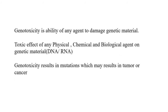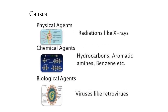Genotoxicity is the ability of any agent to damage genetic material. The toxic effect of any physical, chemical, or biological agent on genetic material — which may be DNA or RNA — results in mutations that may lead to tumors. Causes include physical agents such as radiation, UV, and X-rays; chemical agents like hydrocarbons, aromatic amines, and benzene; and biological agents such as retroviruses.